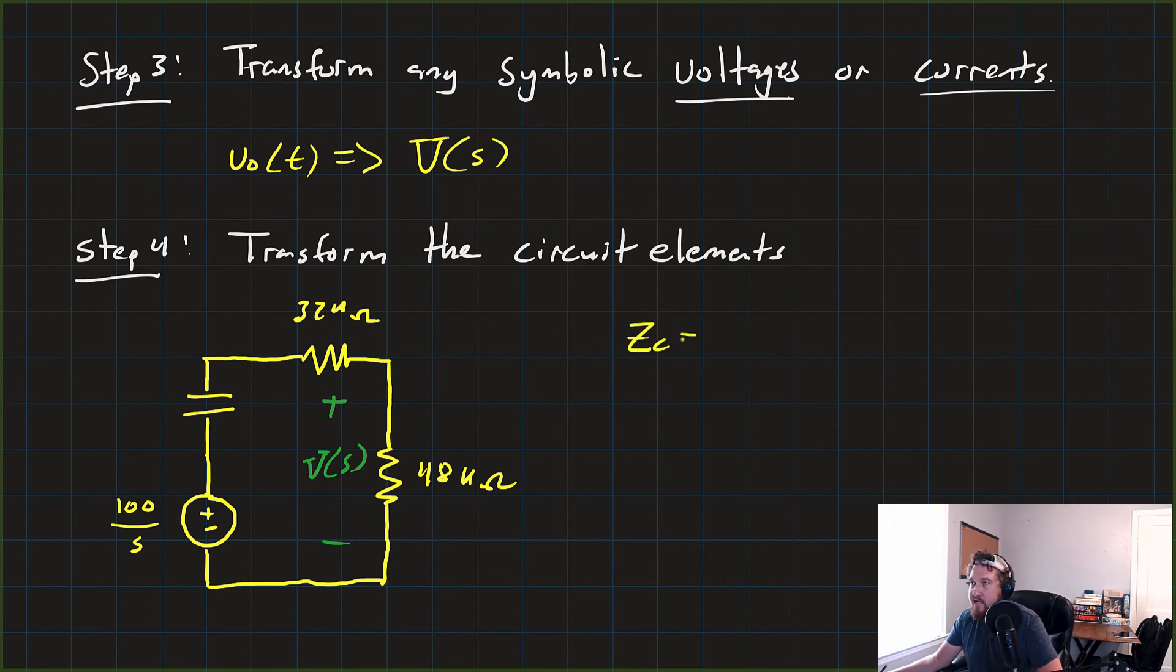Remember that Zc is equal to 1 over SC. So that's going to be equal to 1 over S times, what do we have? 0.5 times 10 to the negative 6. We're going to go ahead and pull that out of the denominator and get that it's 2 times 10 to the 6 over S. 2 times 10 to the 6 over S. And it's impedance, so it's given in ohms.